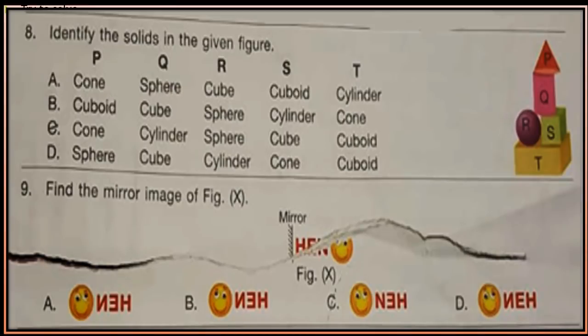Question 8: Identify the solids in the given figure. Now look at the figure. P, Q, R, S and T are some solid shapes in the given figure. You have to identify these solid shapes.